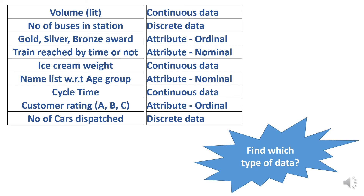Name list with respect to age group — this is a name list but position is important, so it's ordinal data. Cycle time — time we can convert, so that is continuous data. Customer rating A, B, C — order is important, so that is ordinal data. Number of buses dispatched — it's just a number and a count, so that is discrete data.